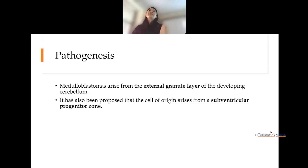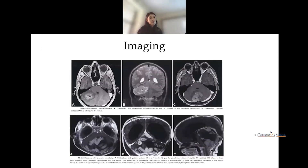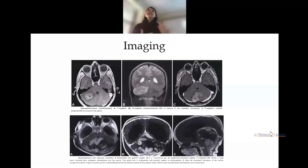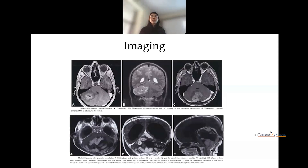These tumors are suspected to arise from the external granular layer of the cerebellum or from the subventricular progenitor zone. Imaging is very important — when a case comes in, we look for the extent of the tumor on MRI. On T1-weighted imaging, the tumor appears iso- to hypointense.